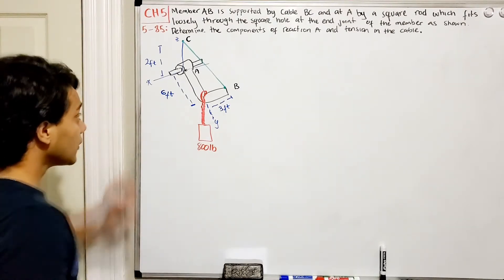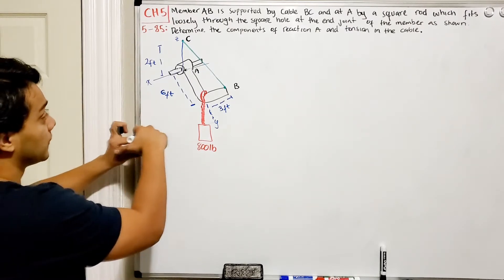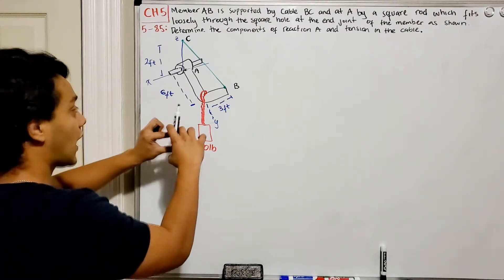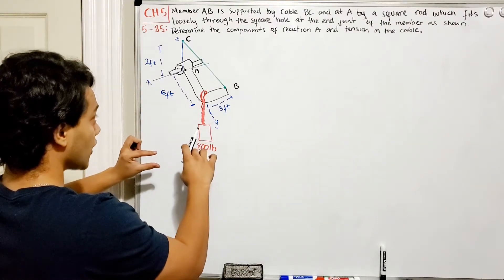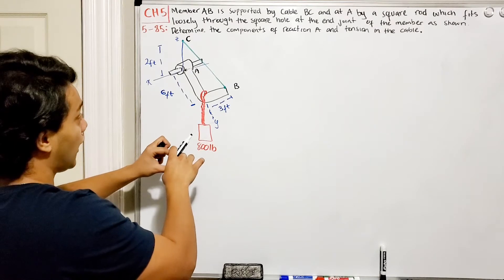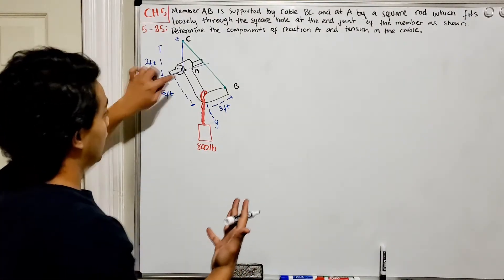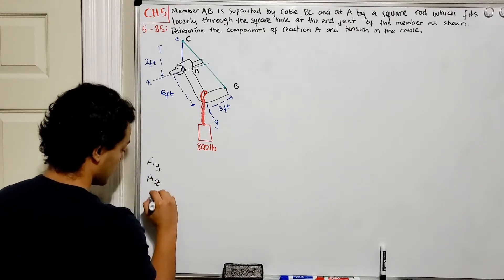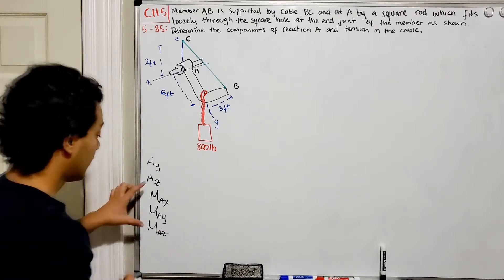What do we know about this square rod? It allows translation in the direction where the square is — in this case, the x-direction — so we won't have any reaction force in x. But it won't allow rotation in any direction, and it won't allow movement in y or z. So basically we have five total reactions at point A: Ay, Az, moment Ax, moment Ay, and moment Az.